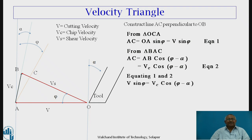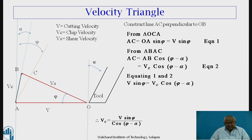Equating equations one and two: V sin phi equals Vc cos(phi minus alpha). Therefore, chip velocity Vc equals V sin phi divided by cos(phi minus alpha). From this, Vc can never be greater than cutting velocity V; Vc is always less than cutting velocity, and generally it is about half of cutting velocity.